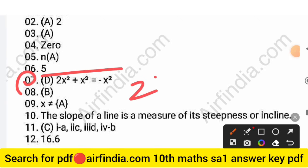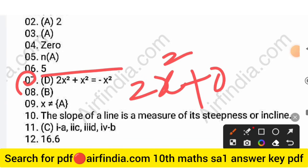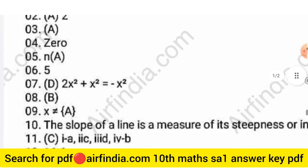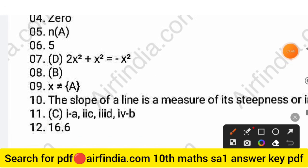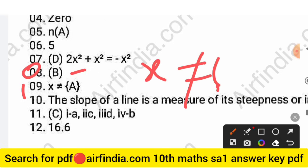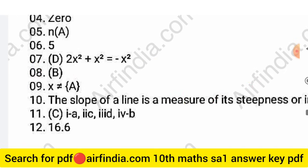For Question 7, the answer is 2x² + x² = −x². Question 8 answer is 2. Question 9: the correct answer is x is not equal to a.